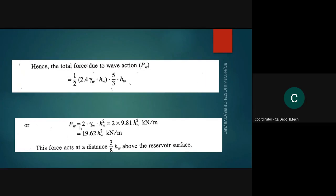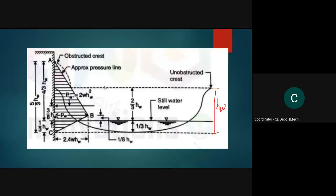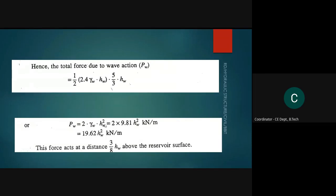Pw = 2γW·HW². Calculating further with γW = 9.81, we get Pw = 19.62·HW² kilonewtons per meter. This force acts at a distance of 3/8 HW above the reservoir surface. These values are pre-calculated and can be used directly by substituting HW into the expression.